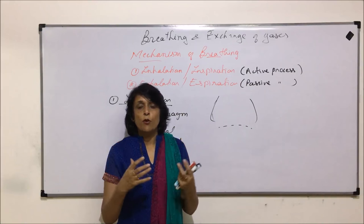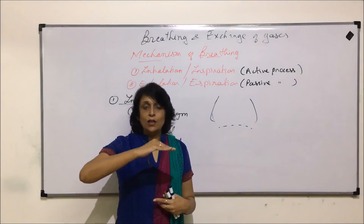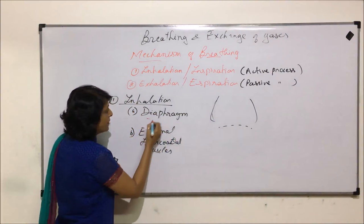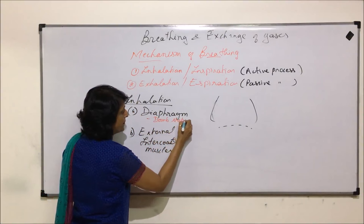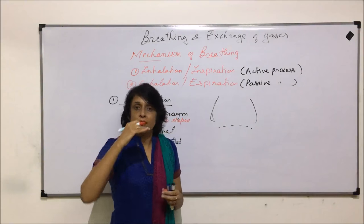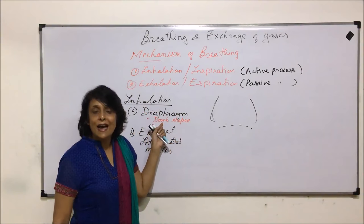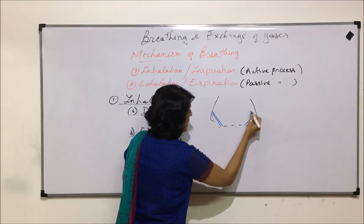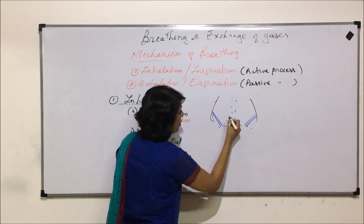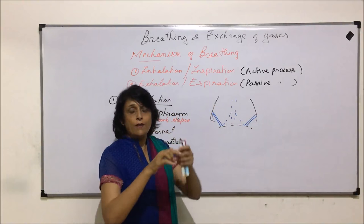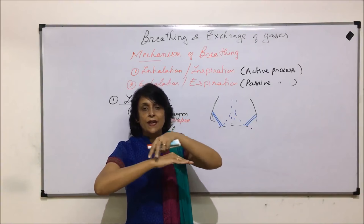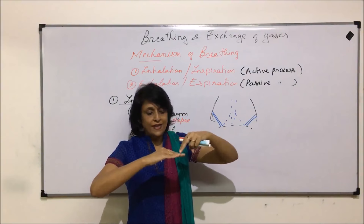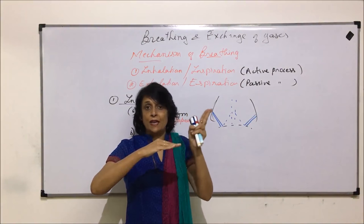In the thoracic cavity, the sides are guarded by the ribs, and the lower side — the boundary between the thoracic cavity and the abdominal cavity — is the diaphragm. This diaphragm is normally dome-shaped. The muscles attached to the diaphragm run from the peripheral part of the diaphragm going to the ribs and also to the backbone on the dorsal side.